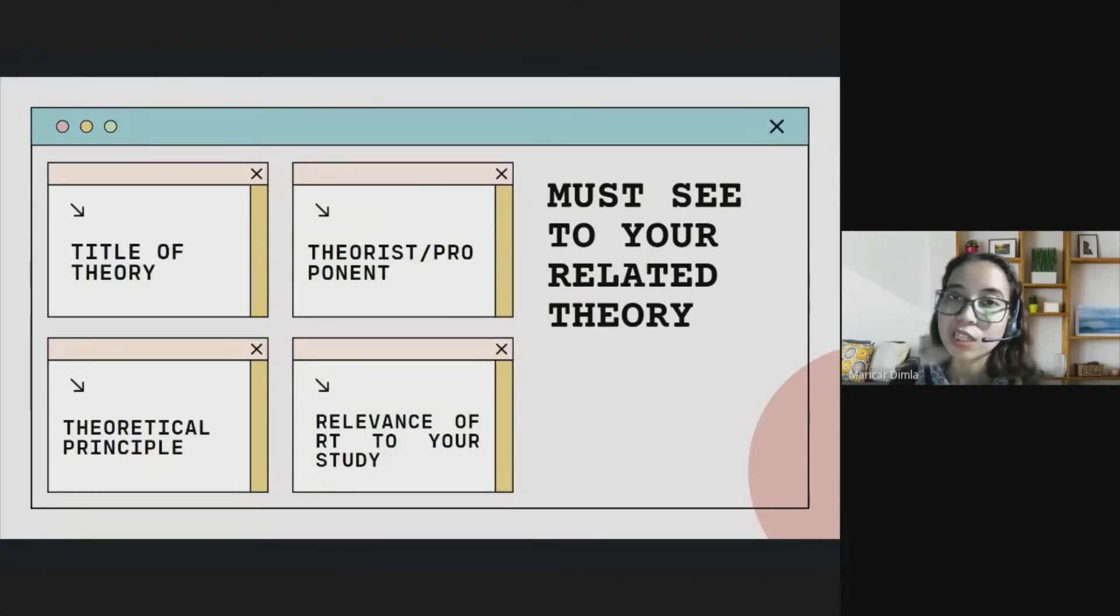Followed by the theoretical principle. This has something to do with the E of the SEC approach, which is explain. What's with that theory? And then last part, relevance of that related theory to your study. This is the letter C on the SEC approach, contextualizing. You need to connect, not just simply explain, how this related theory has relevance or connection with your ongoing study.